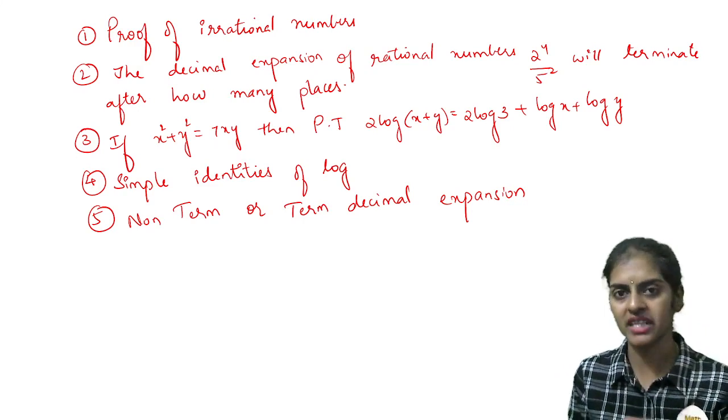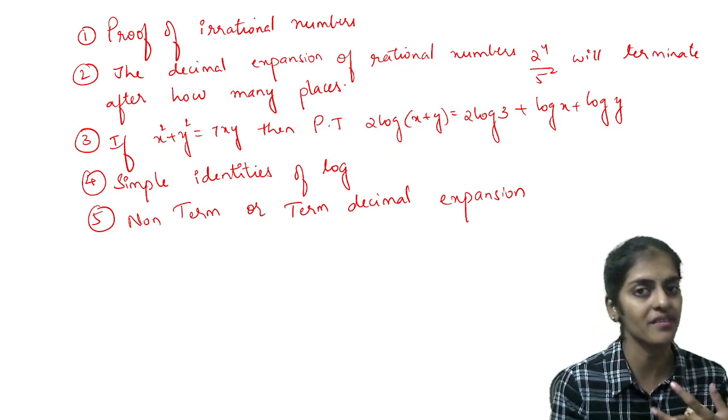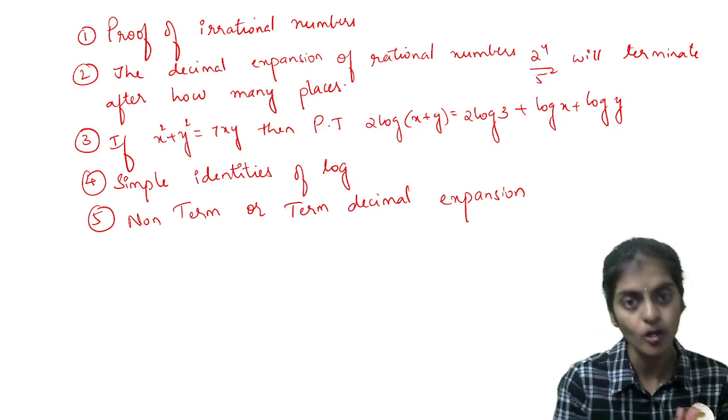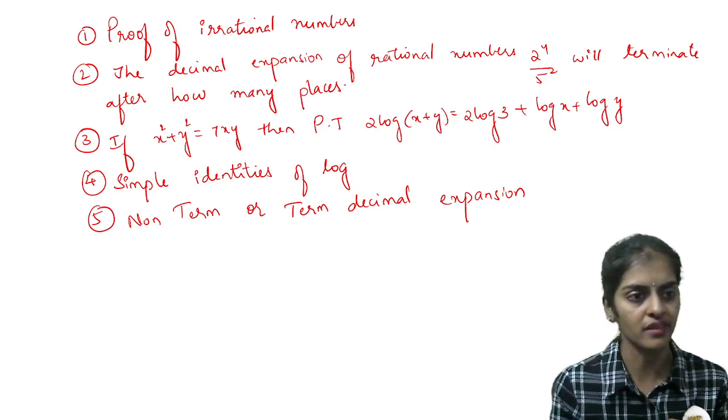The first model is proof of irrational numbers. They will ask you to prove that root 3, root 5, root 7, or 2 root 3 is irrational. For all these, you'll write the same type of answer.